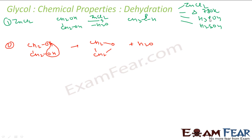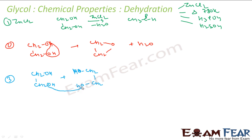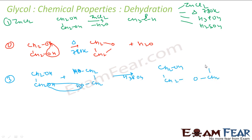The third dehydration condition is H3PO4. With three CH2OH units and H3PO4 at 780 Kelvin, water is removed and we get CH2OH-CH2O-CH2OH. This is the product when H3PO4 is used as the dehydrating agent.